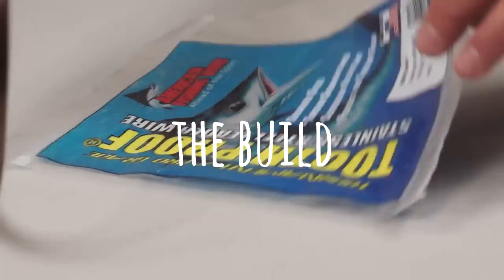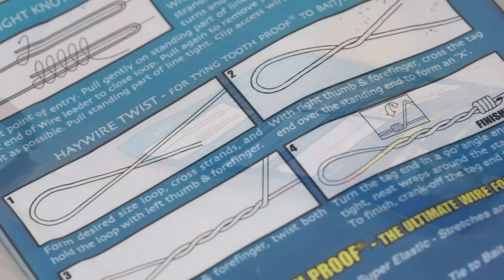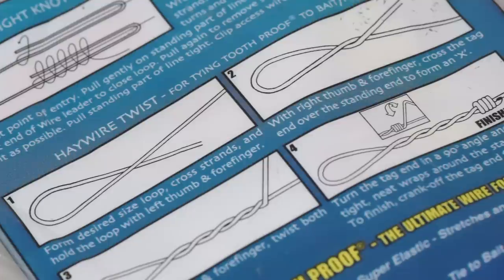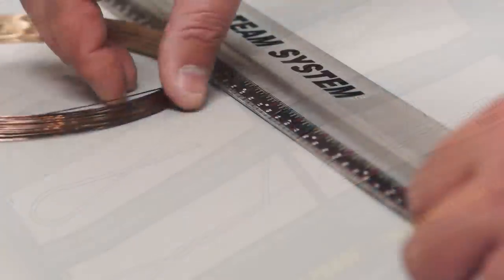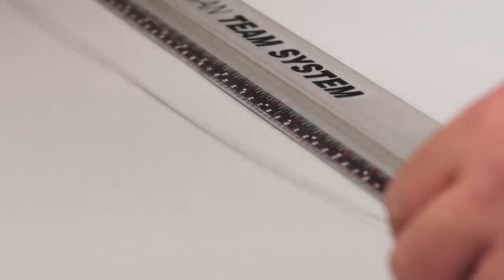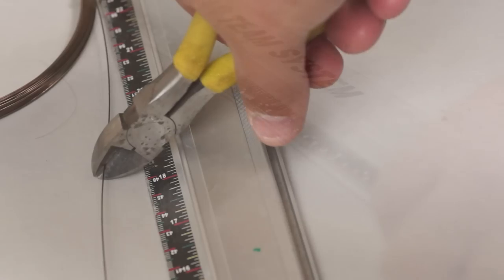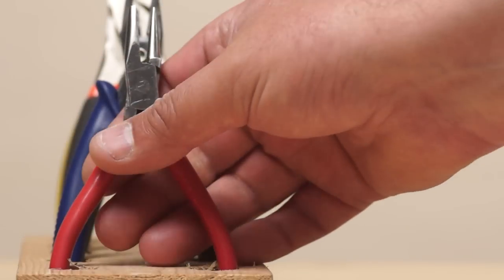The great thing about this packet of wire is on the rear it gives clear instructions on how to form the connecting loops. To start with I'm going to cut off 18 inches of wire.